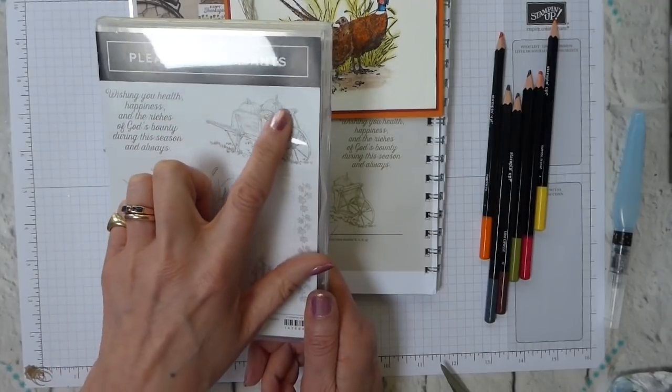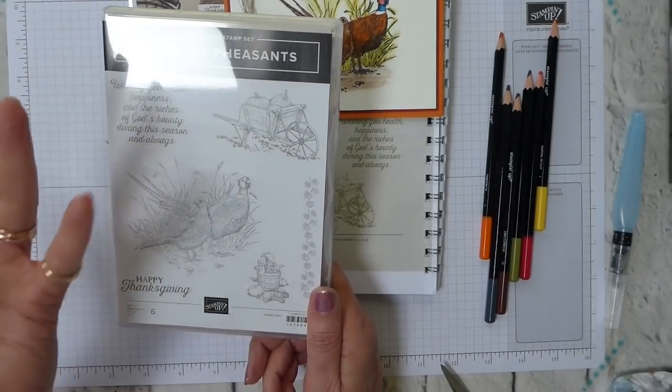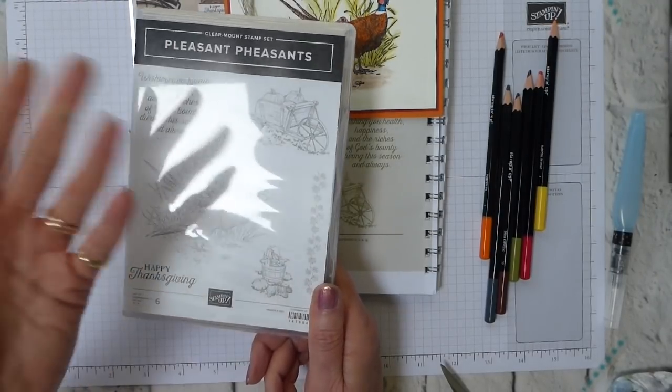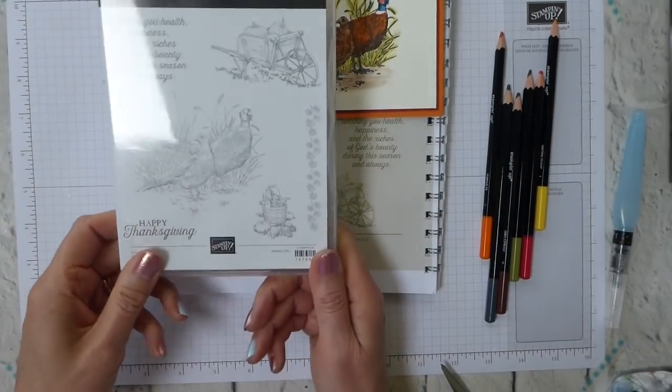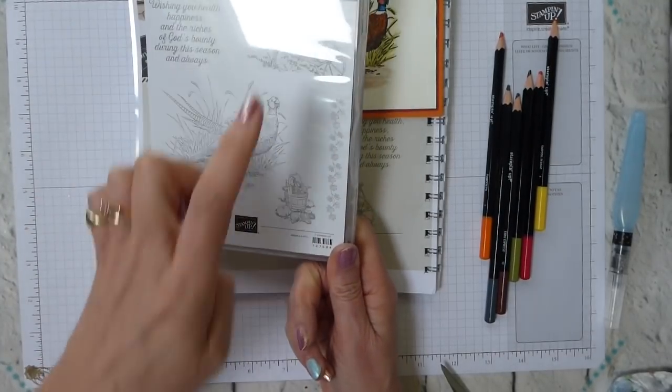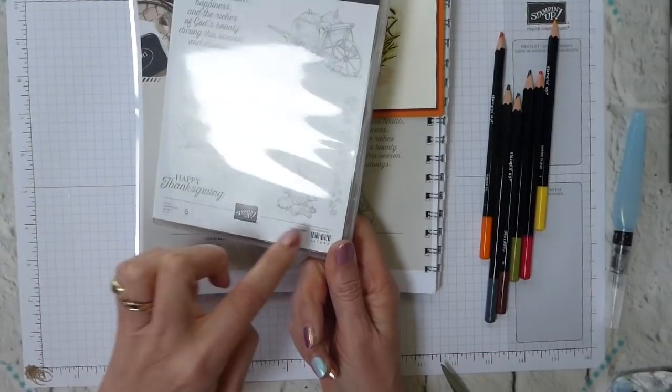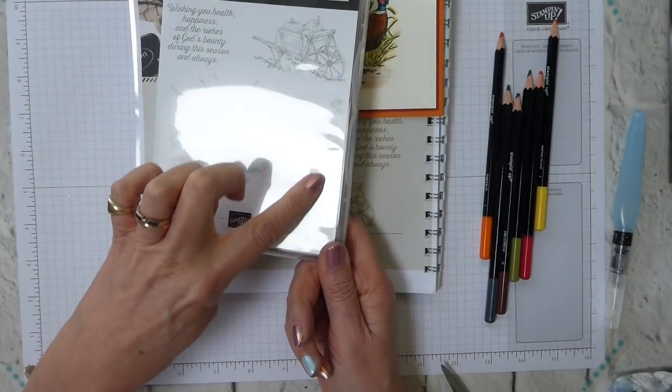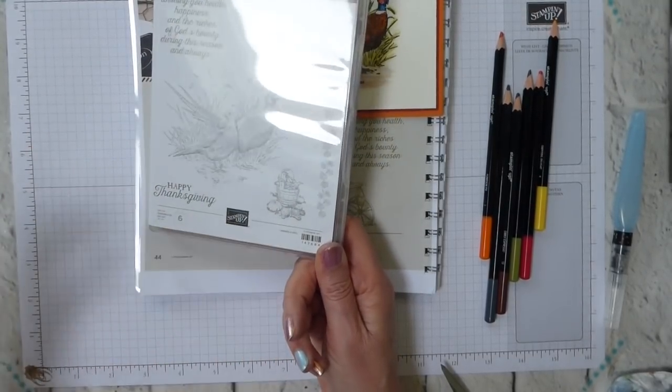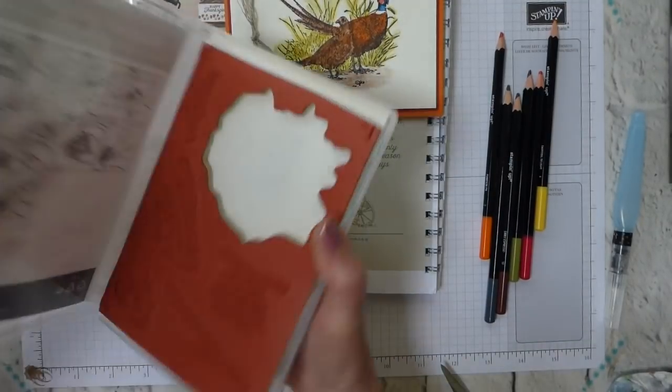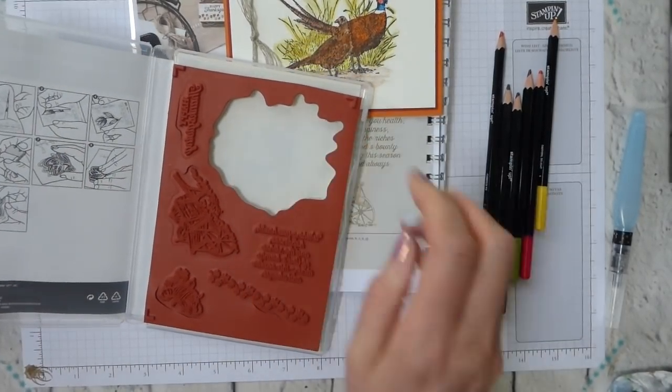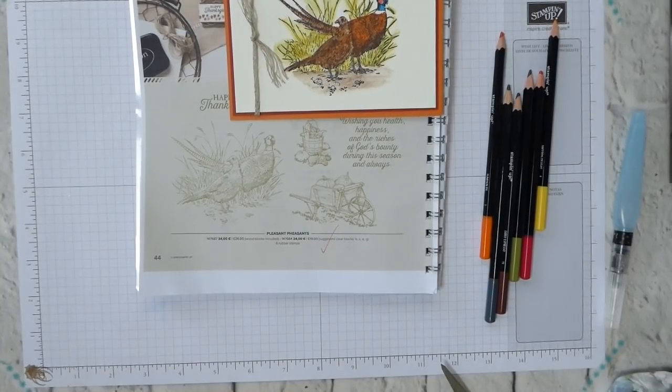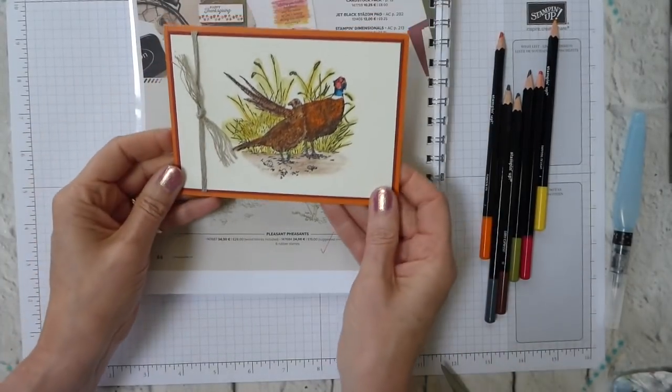There's this lovely wheelbarrow which has got pumpkins in. They're just a squash, so you can color them in a different way if you don't want them to look like pumpkins. And then this lovely bucket, and this beautiful vine is just lovely. It's red rubber. I'm using the pheasant stamp, obviously. And I love it, and this is the project.